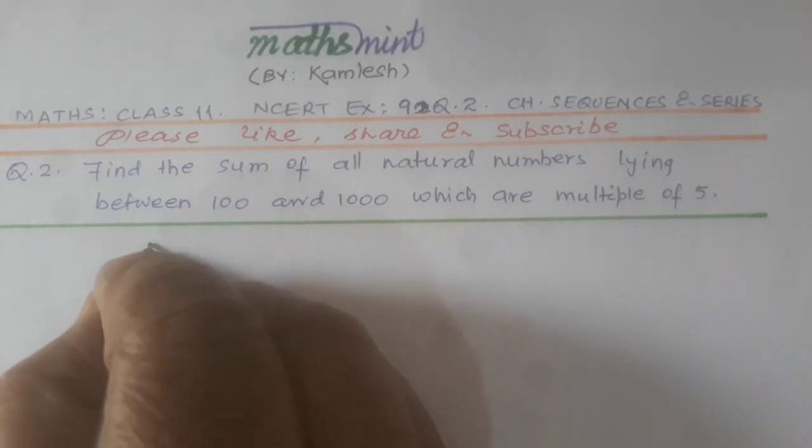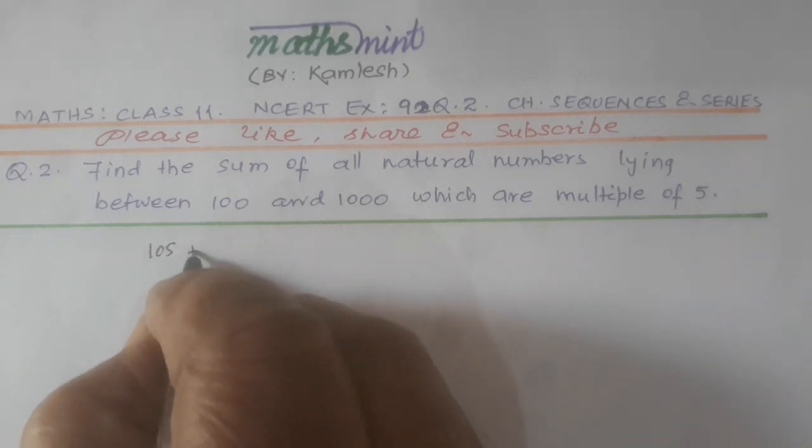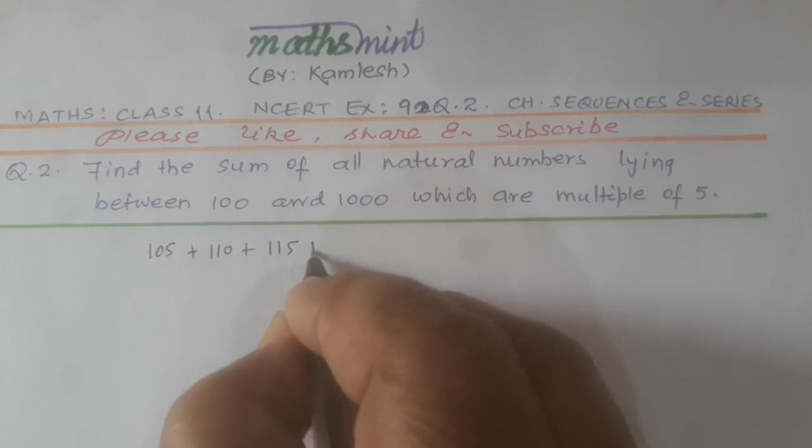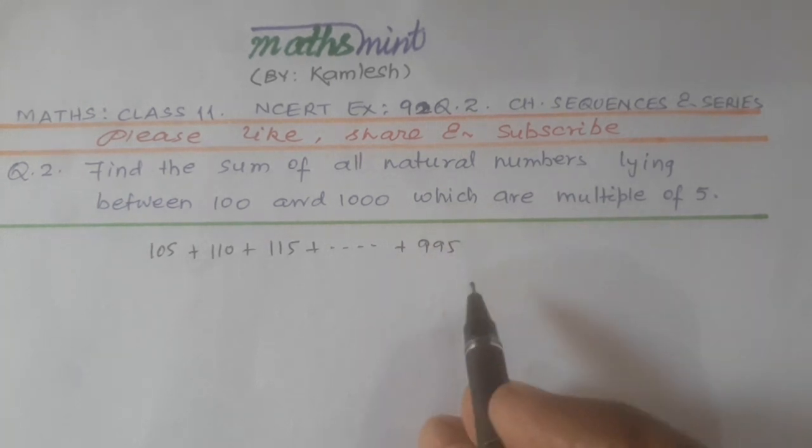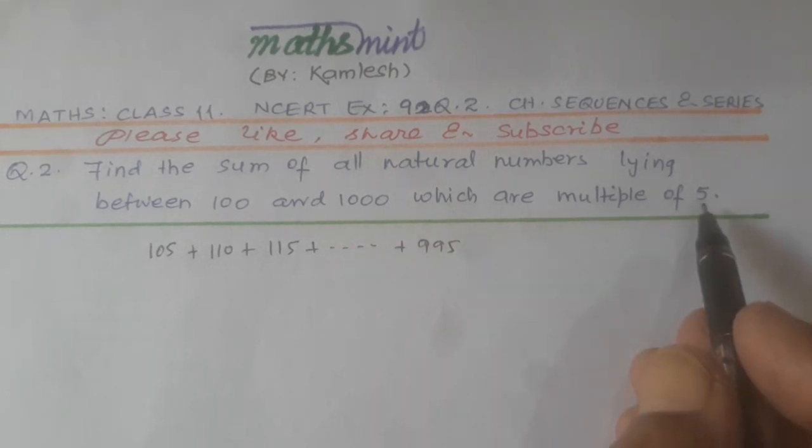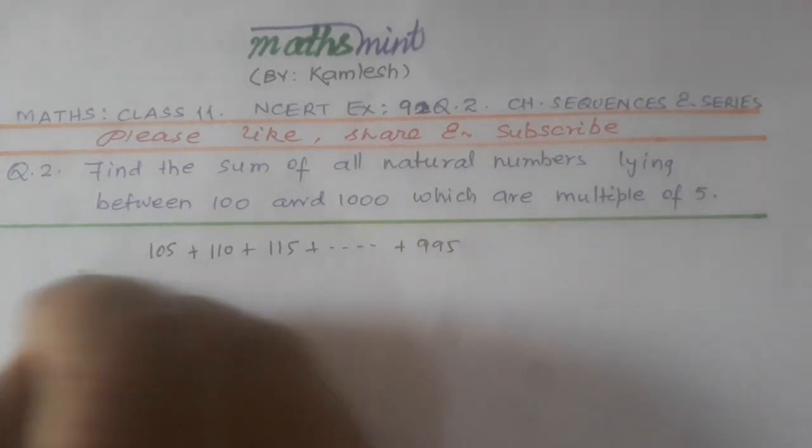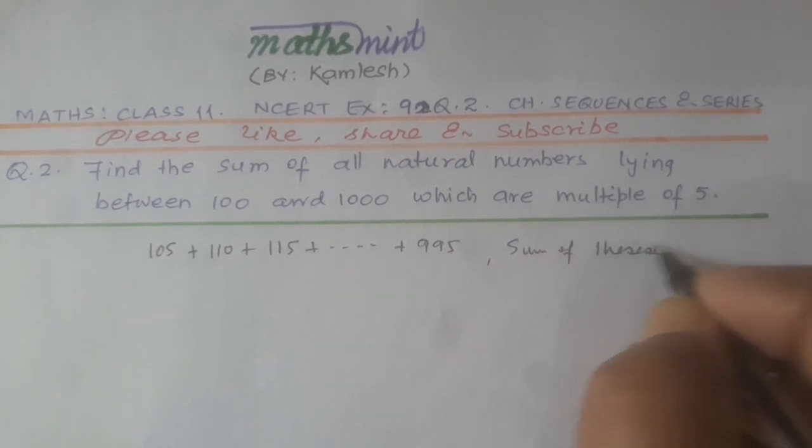So the numbers will be 105, because 100 we do not include, then 110 plus 115 plus and so on up to 995, because we have to take one term less than 1000. So the multiple of 5 less than 1000 will be 995. We have to find the sum of these terms.